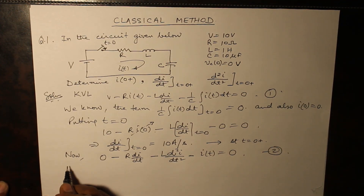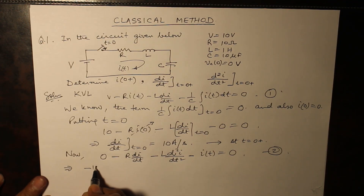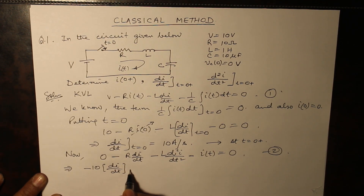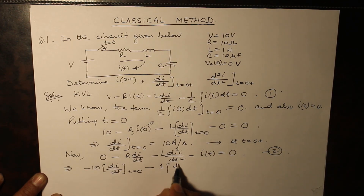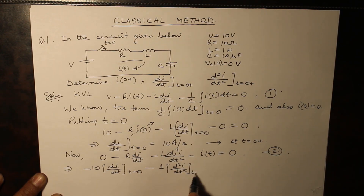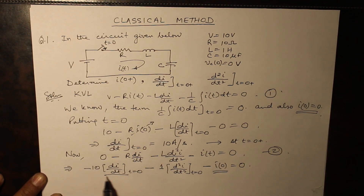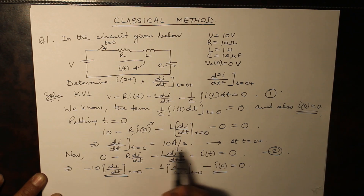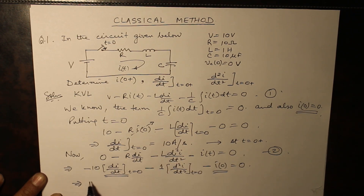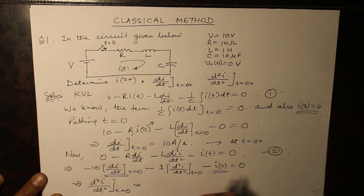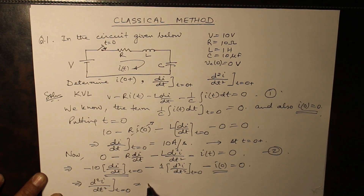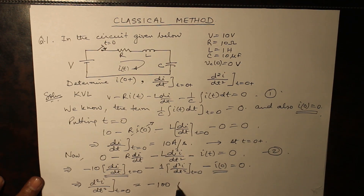In this equation we also substitute t=0. That gives us: substituting the values of R, L, C — minus 10 times dI/dt at t=0 minus L (which is 1) times d²i/dt² at t=0, minus i(0) is equal to zero. We know i(0)=0 and dI/dt at t=0 is 10 amperes per second. Substituting the values, we obtain d²i/dt² at t=0 as minus 100 amperes per second squared.